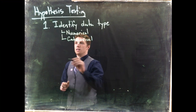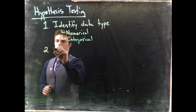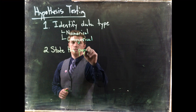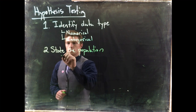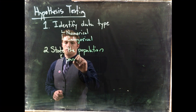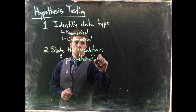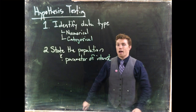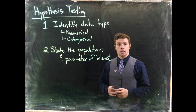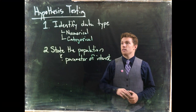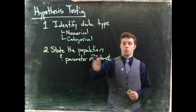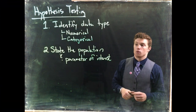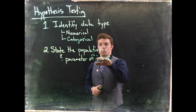Step number two is another step we've already done: state the population and parameter of interest. We have to know who we're talking about and what we're interested in. For numerical data, the parameter will be mu — the true mean of something like weight or speed.